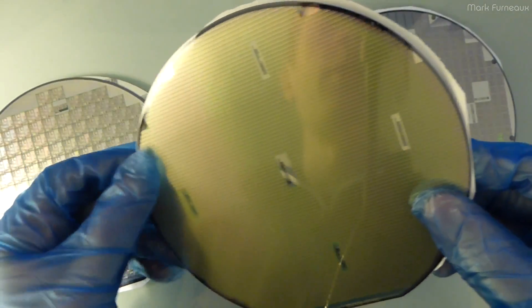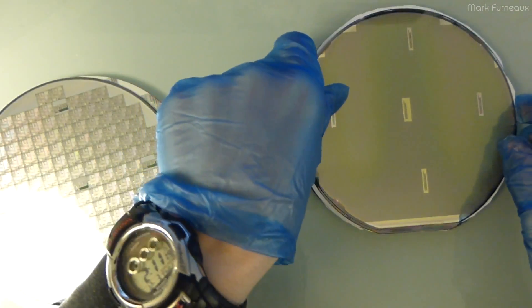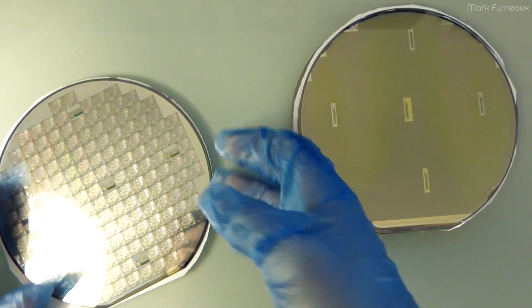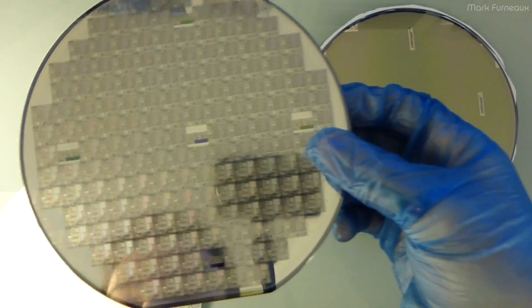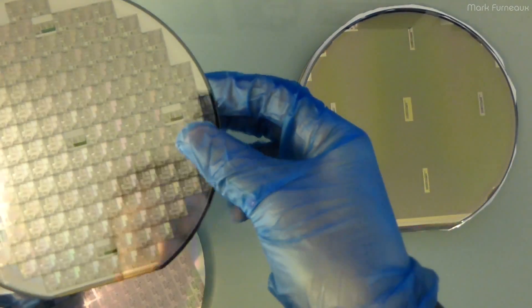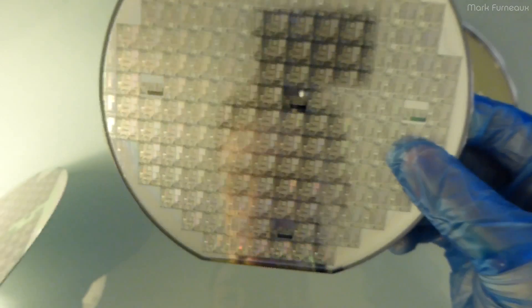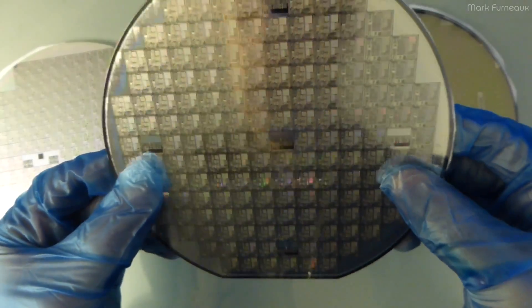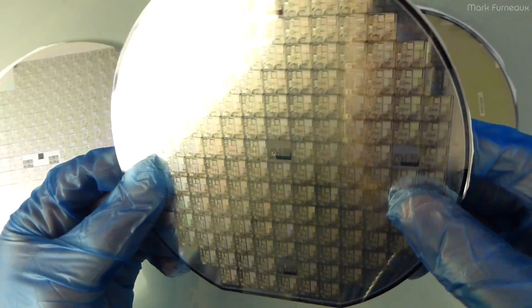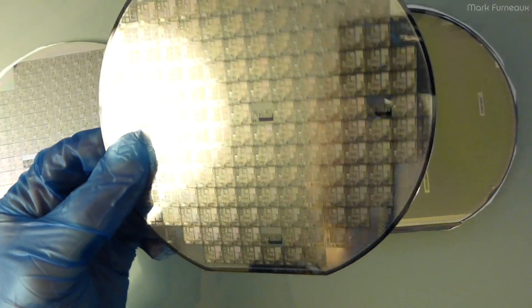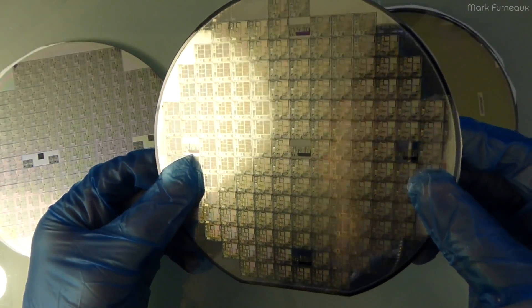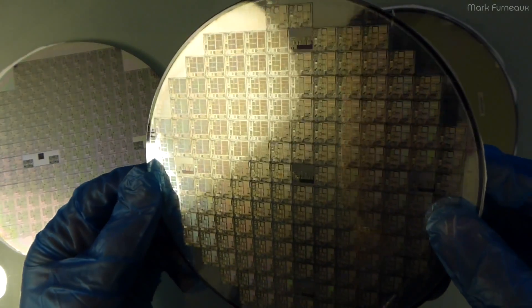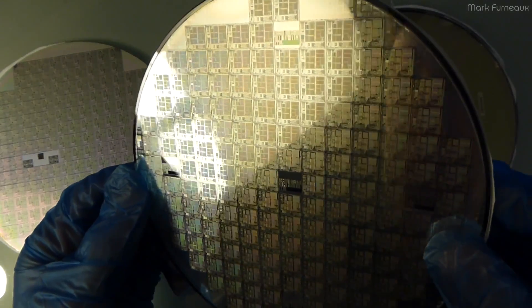This one might be something really really simple like an op amp or logic gate because the dies are incredibly small in this one. So this is very low amount of logic if it even is logic it could be an analogue die I don't really know. So my guess is this is the Texas Instruments TMS 370 microcontroller, actually no sorry this would be a microprocessor not a microcontroller I don't think it has any memory in it because that looks to be the right die.